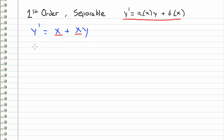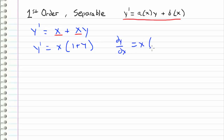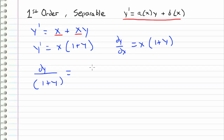We can separate this by factoring out an x and rewriting the equation as dy/dx is equal to x times 1 plus y. And then we can separate these variables by dividing by 1 plus y and moving the dx over to the other side.